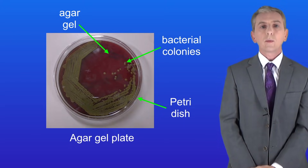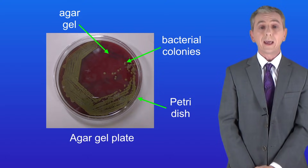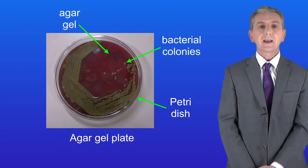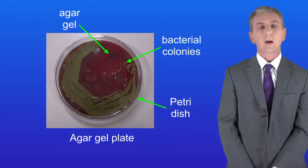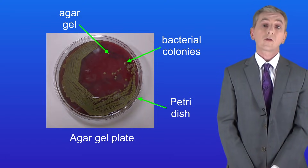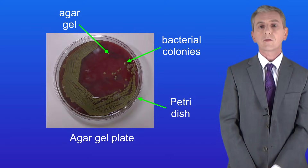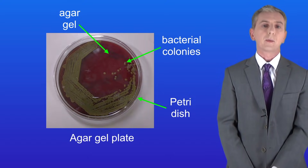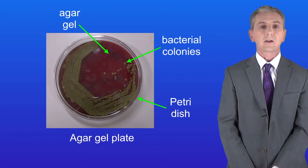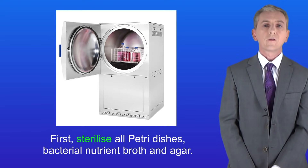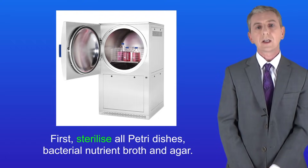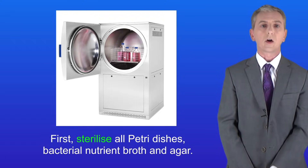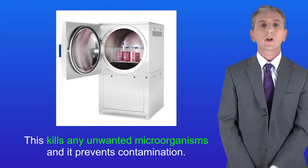When we make a nutrient broth solution or agar gel plates it's really important that we avoid contamination, and you could be asked how to do this in your exam. There are lots of microorganisms such as bacteria and fungi naturally in the environment and these could easily contaminate our cultures. So the first stage is that we carefully sterilize all petri dishes, bacterial nutrient broth and agar. This kills any unwanted microorganisms and prevents contamination.